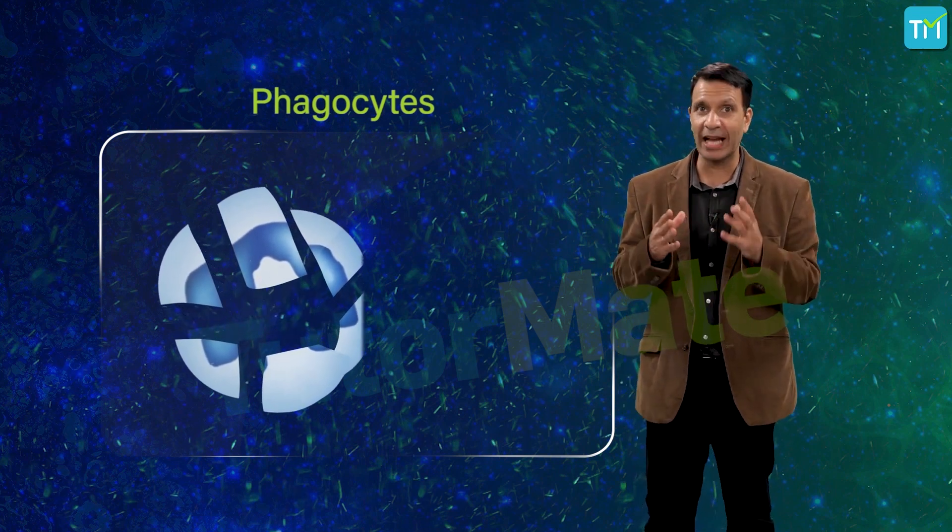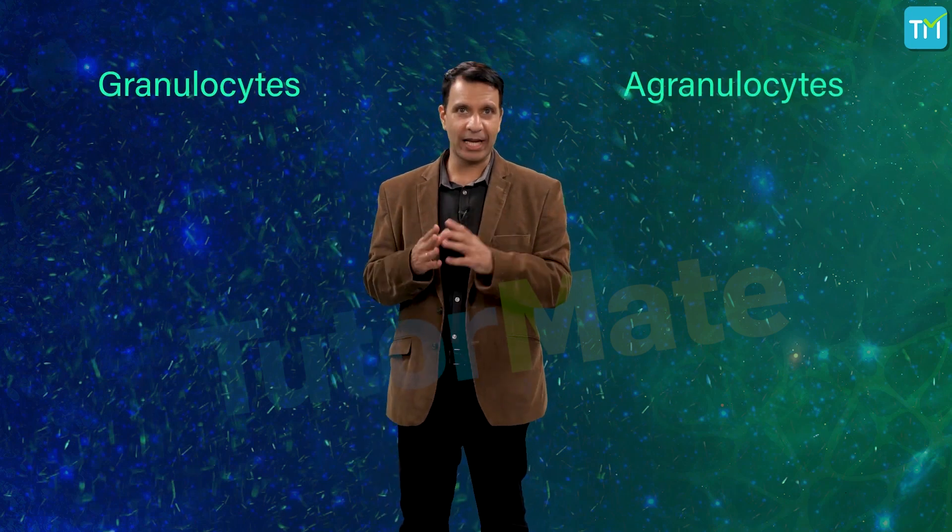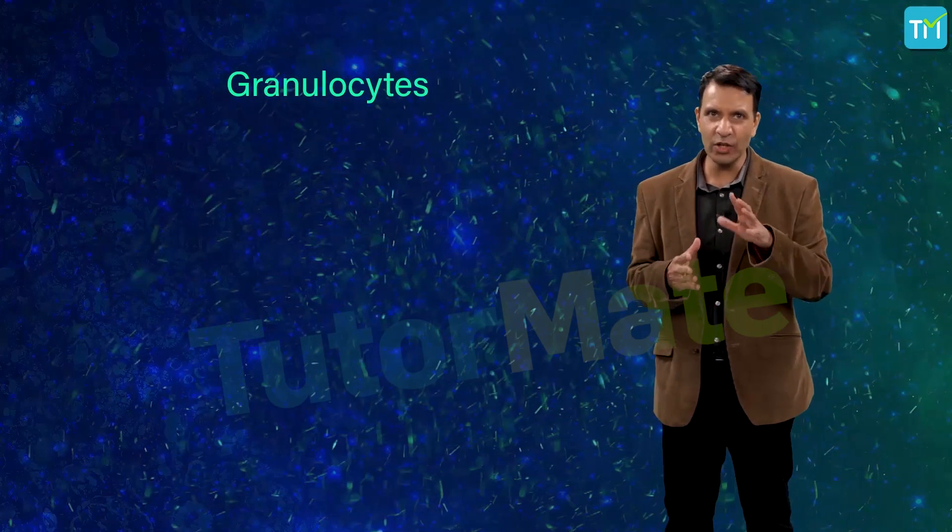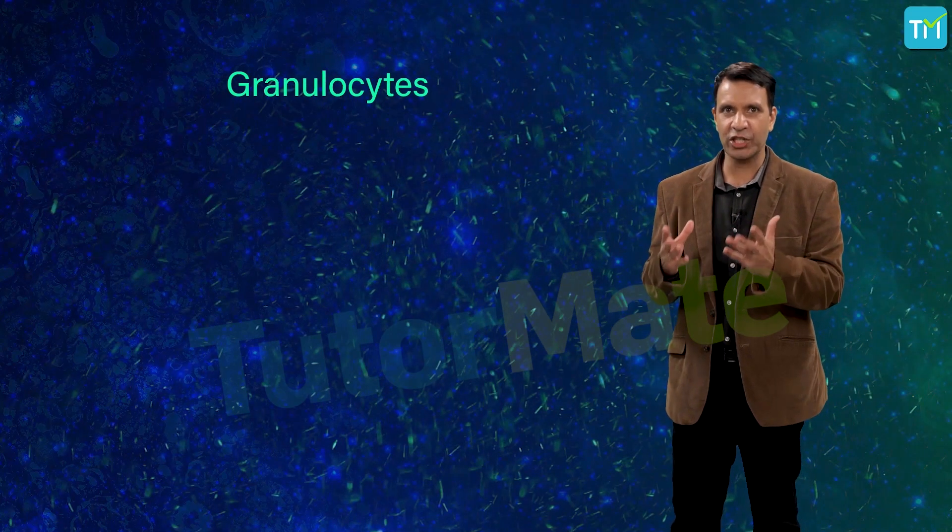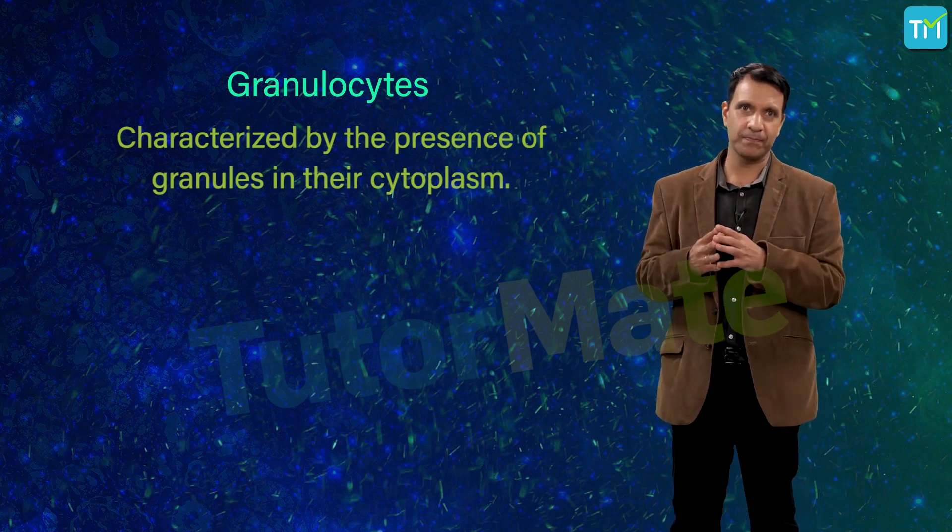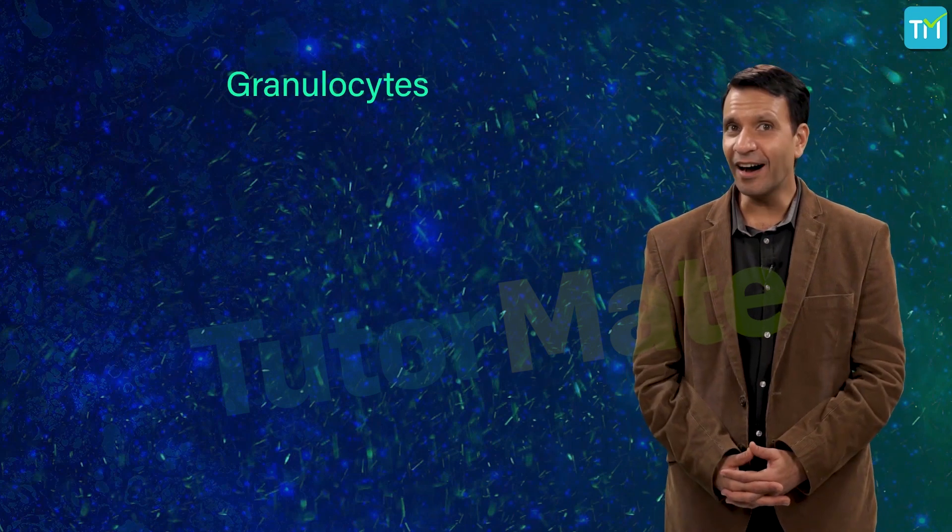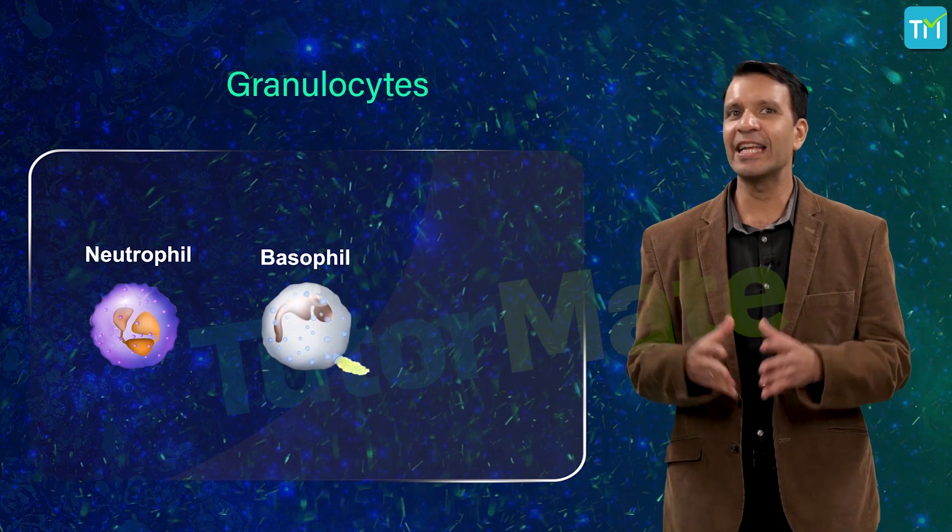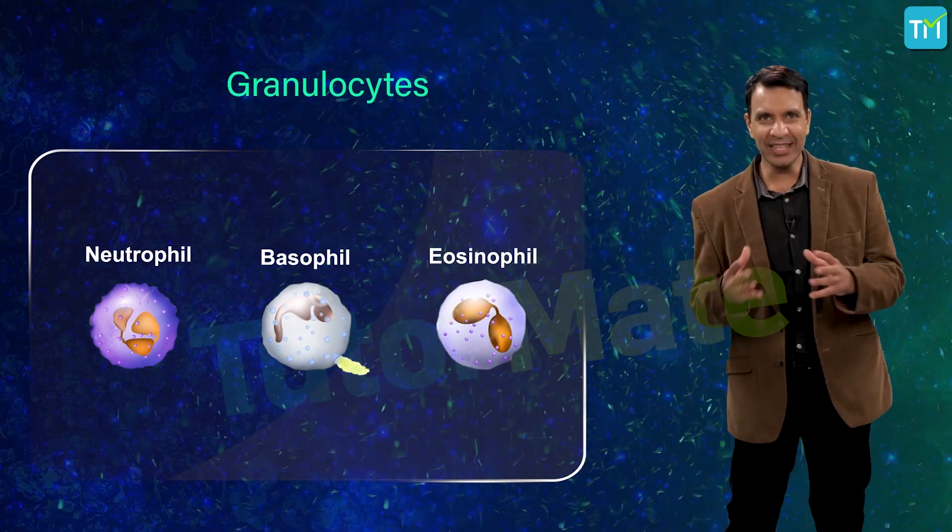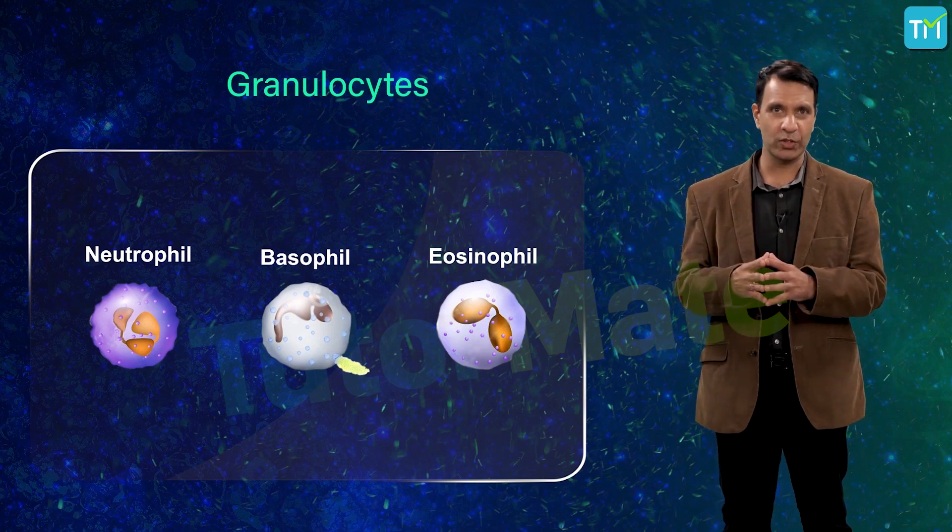The process of ingesting bacteria and other foreign substances by phagocytes is called phagocytosis. Further, phagocytes are of two types: granulocytes and agranulocytes. As the name suggests, granulocytes are irregular-shaped cells characterized by the presence of granules in their cytoplasm, and there are three types: neutrophils, basophils, and eosinophils.